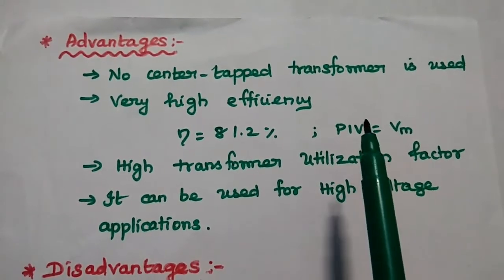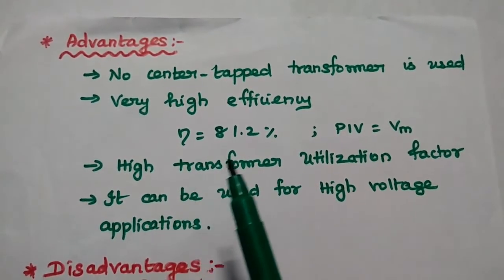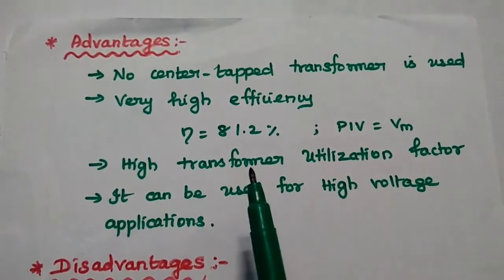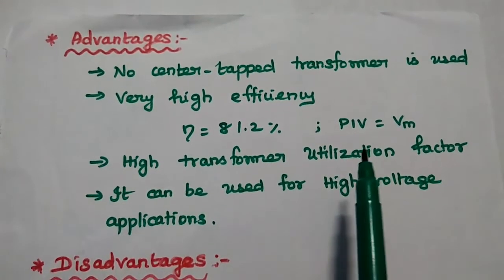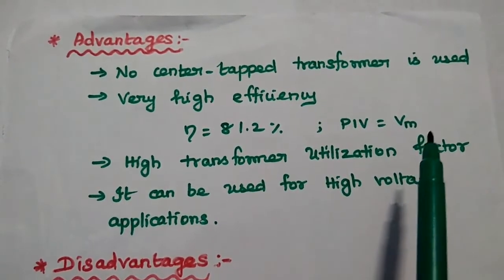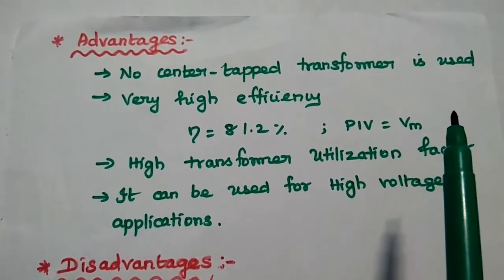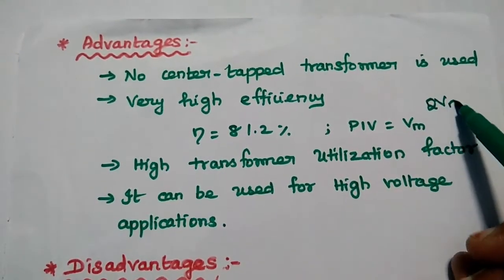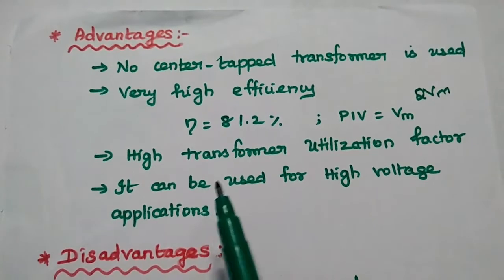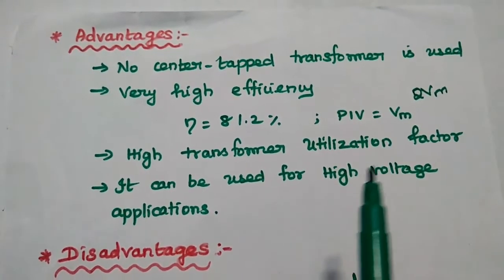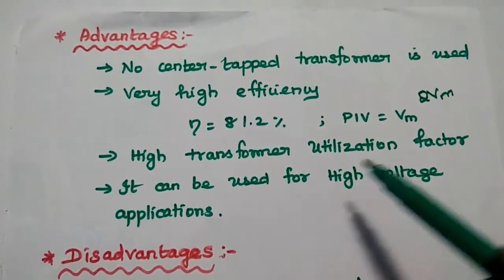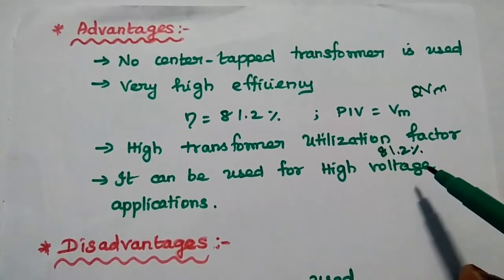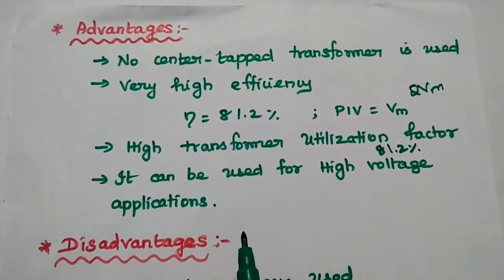Advantages of bridge rectifier: no center-tapped transformer is used; it has very high efficiency of 81.2%; the peak inverse voltage is only Vm, whereas in a normal full-wave rectifier with a center-tapped transformer the PIV is 2Vm; it has a high transformer utilization factor of 81.2%, meaning the transformer is utilized properly; and it can be used for high voltage applications.